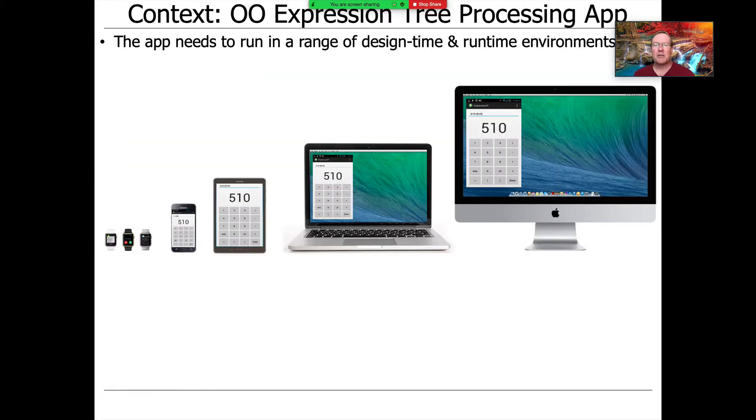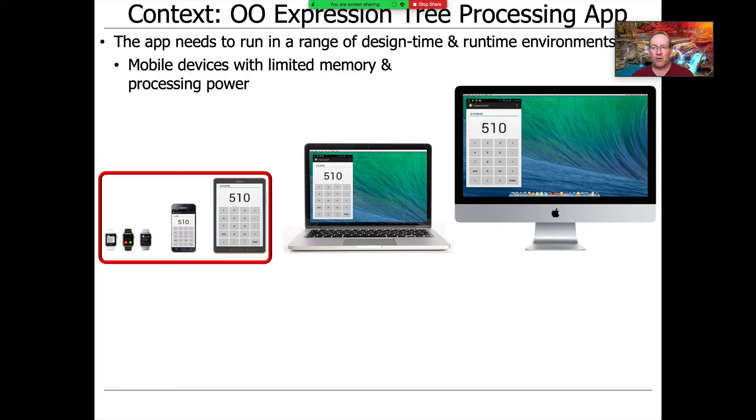Let's talk about some examples where this might be useful. We might want our expression tree app to run in a range of design-time and runtime environments. For example, we might want it to run in mobile devices like a smartphone, tablet, or wearable that have very limited memory and processing power, so we need to make certain tradeoffs to optimize time for space.